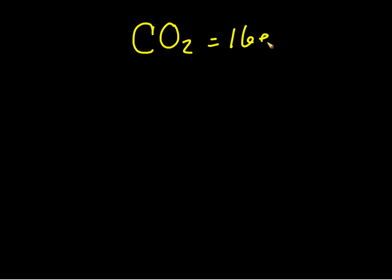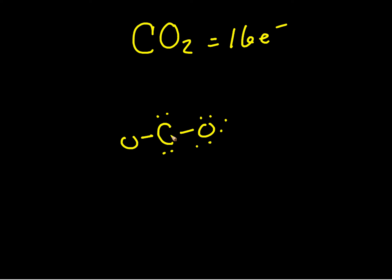Now CO2 — we have 16 electrons. Carbon will be my central atom. Trying single bonds first: with only four electrons around carbon, we put two sets of lone pairs. Each oxygen only has two electrons around it, so we add three sets of lone pairs each. Counting the electrons: two, four, six, eight, ten, twelve, fourteen, sixteen, eighteen, twenty — we have 20 electrons in our structure, but we need 16. That doesn't match.